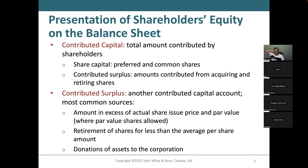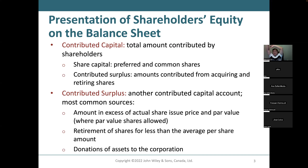Contributed surplus arises because the share price changes all the time on the market. The company sometimes will go and buy or sell shares. Because the market is fluctuating, sometimes you may buy low and sell high — then you make money. That money you make is considered contributed surplus. When you buy low and sell high, that money is not revenue because selling shares is not your normal business activity. So the gain on shares is called contributed surplus.